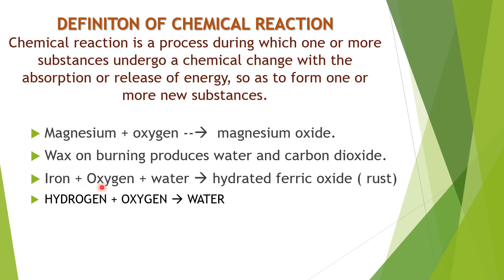Iron combined with oxygen in the presence of water forms hydrated ferric oxide, which you have already seen as rust — it is a chemical change. Hydrogen chemically reacts with oxygen; when we heat hydrogen, it burns and combines with oxygen to form water, which is also a chemical change.